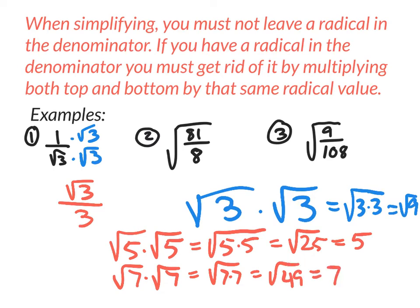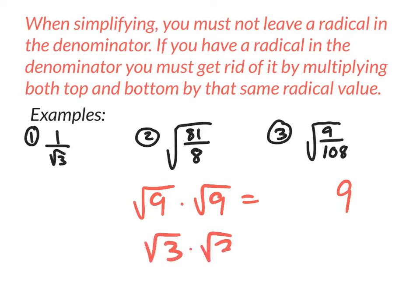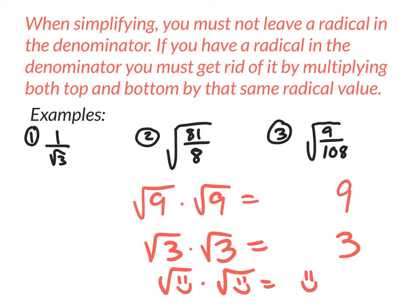What is the square root of 4 times the square root of 4? That's really just 4. Whenever you multiply a square root value with itself, it eliminates the square root. So the square root of 9 times the square root of 9 is 9. The square root of 3 times the square root of 3 is 3. The square root of happy face times the square root of happy face equals happy face. Simple as that. Whenever you take a square root value and multiply it with itself, it eliminates the square root.